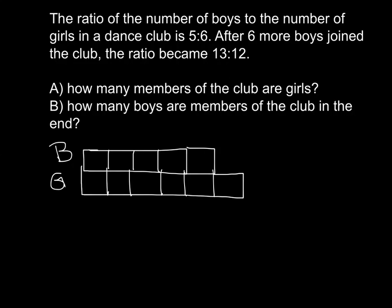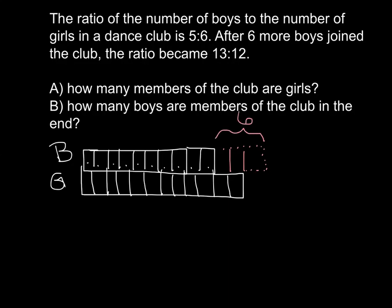We need to change the girls from 6 pieces to 12 without changing the actual size of their bar model, so we split each piece in half. Now we have 12 pieces and didn't change the size of the bar. If we split the girls' pieces in half, we have to split the boys' in half too. The boys are supposed to have 13 pieces — right now we have 10 — which means we need to add on 3 more pieces. Those 3 pieces represent the 6 boys that joined the club. So if 3 pieces equal 6, each piece equals 2. All pieces in our bar model equal 2.